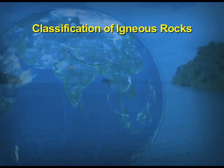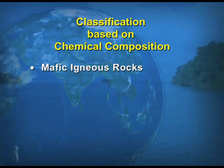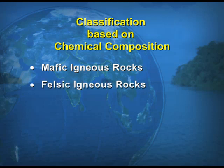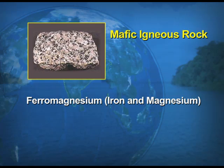We take up the further classification of igneous rocks. Igneous rocks can be classified on two different bases: one is the chemical composition of the rock, and the second is the texture of the rocks. On the basis of chemical composition, the igneous rocks can further be divided into two types: one is the mafic igneous rocks, and the second is the felsic igneous rocks. Mafic igneous rock is a combination of iron and magnesium, so it is called the ferromagnesian mafic igneous rock.